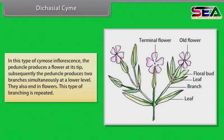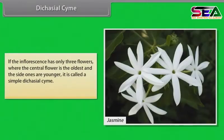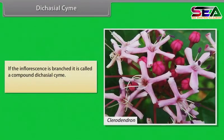In dicasial cyme, the peduncle produces a flower at its tip; subsequently the peduncle produces two branches simultaneously at a lower level, which also end in flowers, and this branching is repeated. If the inflorescence has only three flowers where the central flower is the oldest and the side ones are younger, it is called a simple dicasial cyme. Example: jasmine. If the inflorescence is branched, it is called a compound dicasial cyme. Example: Clerodendron, Reishia.